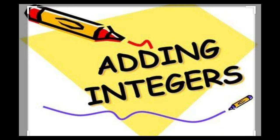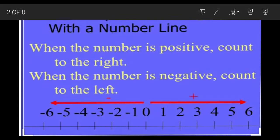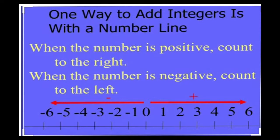We have already learnt how to add integers using a number line. In the earlier video, you studied that whenever a number line is given and you have to add or subtract integers using a number line, it's a very easy task. When a number is positive, just count to the right. When the number is negative, count to the left. And just by hopping from left to right, we get the answers.